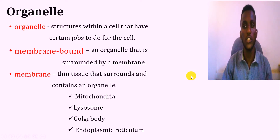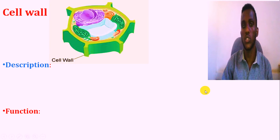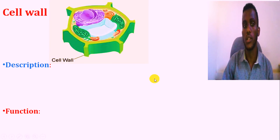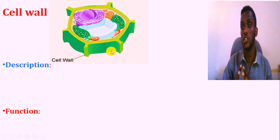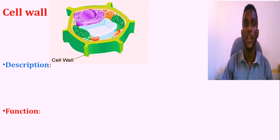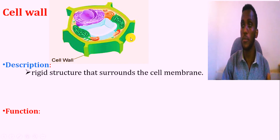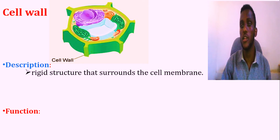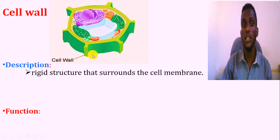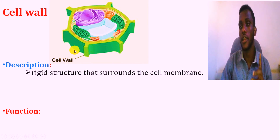So firstly, let's go to cell wall — cell 1. The cell wall is found in plant cells, not found in animal cells. By structure, this is a rigid structure, almost like a cell membrane outer part. This cell wall surrounds the cell membrane. The cell wall is found in plant, bacteria, and fungi.